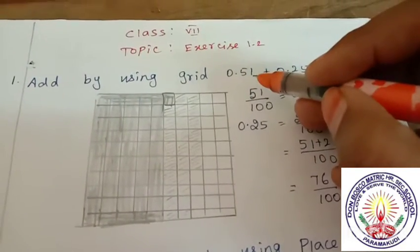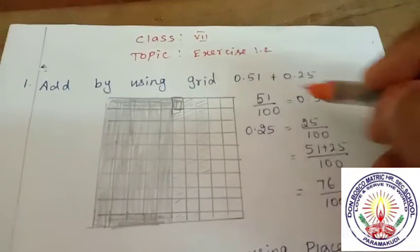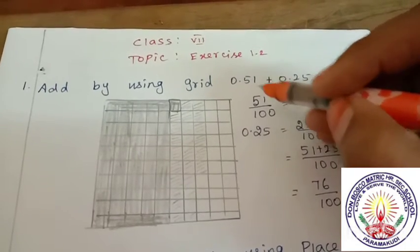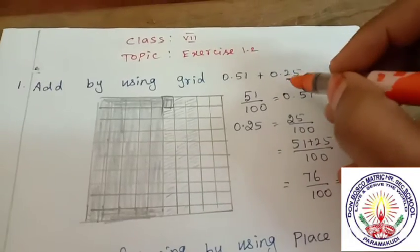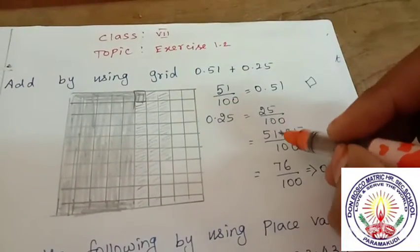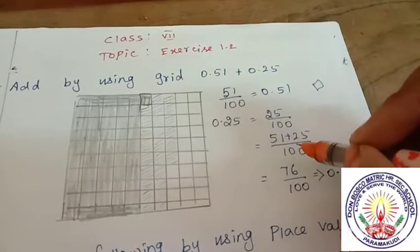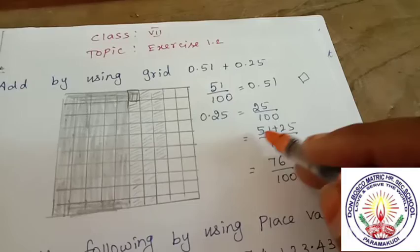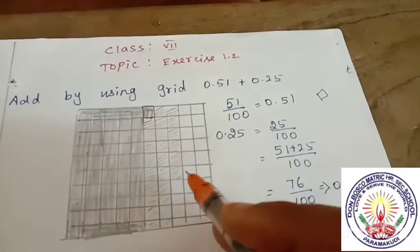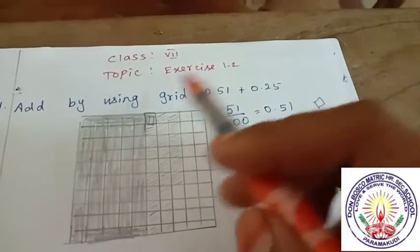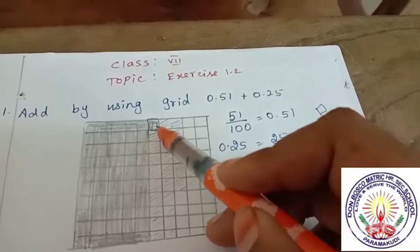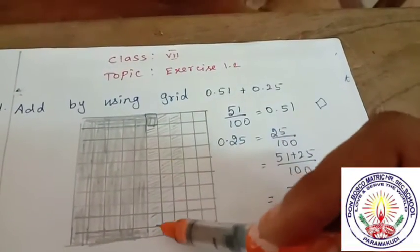For 0.51, after the point two digits, so 51 divided by 100. 0.25 is equal to 25 divided by 100. If you add fractions, denominator is same, so you add numerator only. 51 plus 25: 5 plus 1 is 6, 5 plus 2 is 7, so 76 divided by 100. Now grid model is 76 total places. First one is 0.51, start by color pencil.